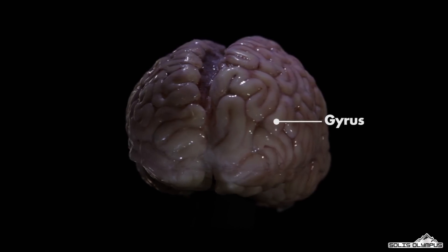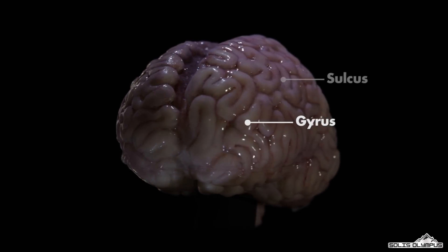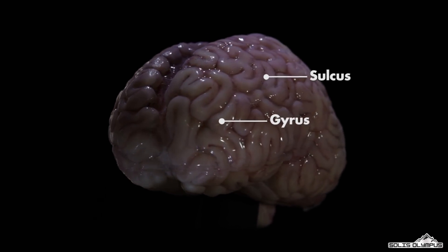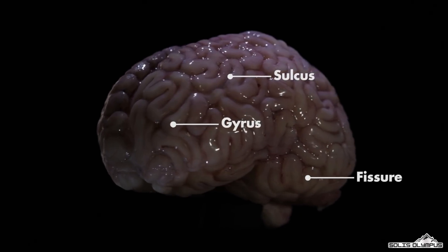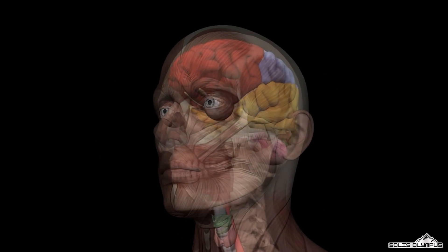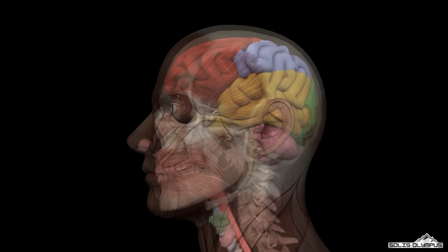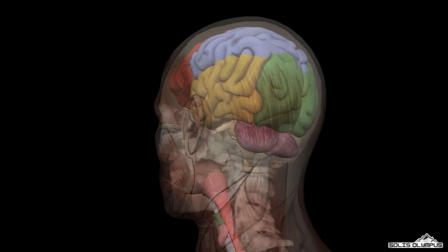Each fold is called a gyrus, and each groove between folds is called a sulcus. There are some larger grooves present, which are called fissures. These large grooves divide cerebrum into four sections called lobes. Each lobe controls specific functions.